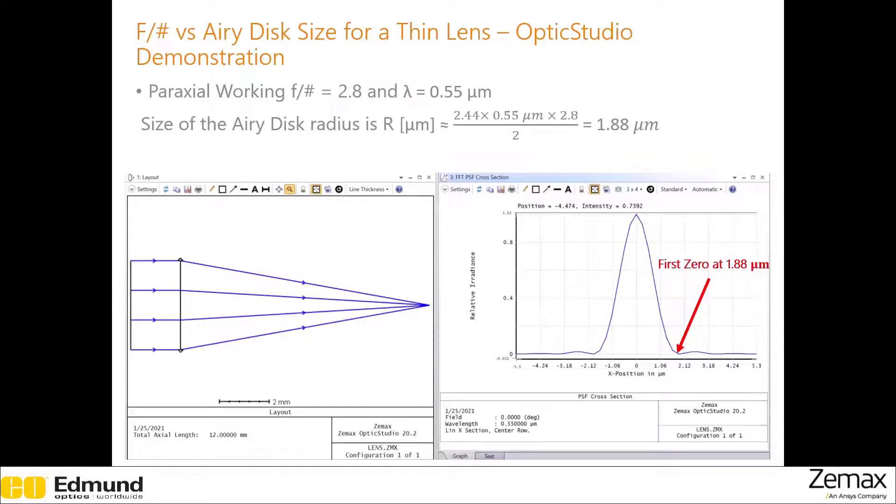If you wanted to know the diameter, just multiply it by two. So this 1.88 micron is exactly what we can find from the relation we saw in the last page.